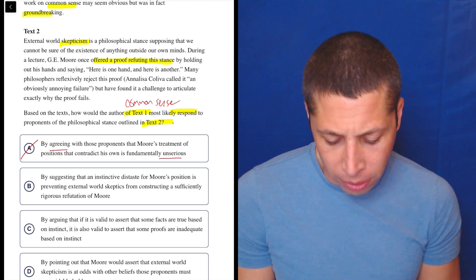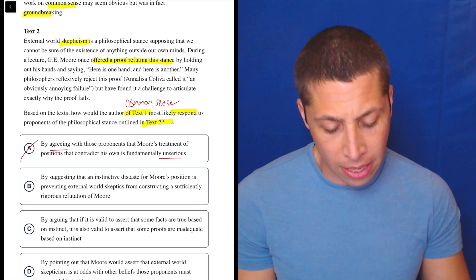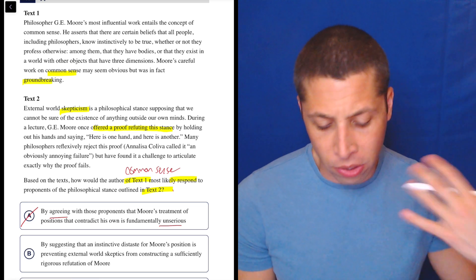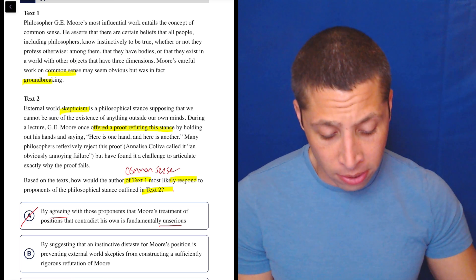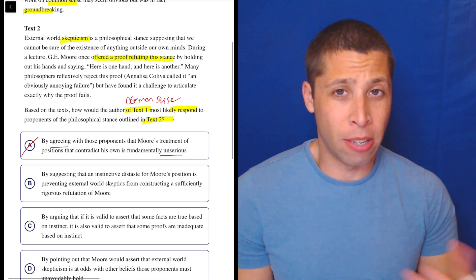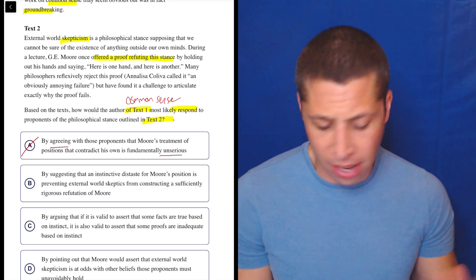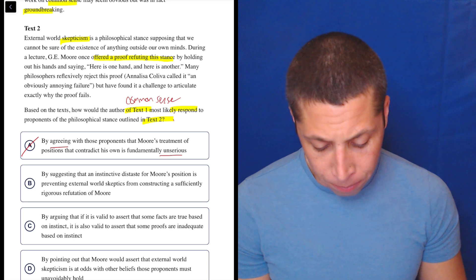Plus, I just don't love the word agreeing, right? It seems like the point is they're disagreeing. That text one is saying Moore was right, I guess. And then two is saying that he's maybe wrong, but we don't have any proof he's wrong. I don't really know. But agreeing does not seem right here.